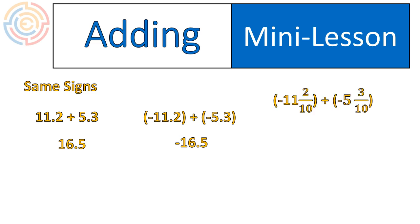In fraction form, it would look like this. Negative 11 and 2 tenths plus negative 5 and 3 tenths equals negative 16 and 5 tenths. This simplifies down to negative 16 and a half, which is the same as negative 16.5.